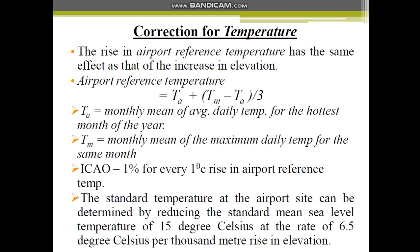Correction for temperature was already discussed — the airport reference temperature can be calculated by this formula. Mean sea level temperature is 15 degrees Celsius. The standard temperature at the airport site can be determined by reducing the standard mean sea level temperature of 15 degrees Celsius at the rate of 6.5 degrees Celsius per 1000 meter rise in elevation. You will get the standard temperature at the airport site.